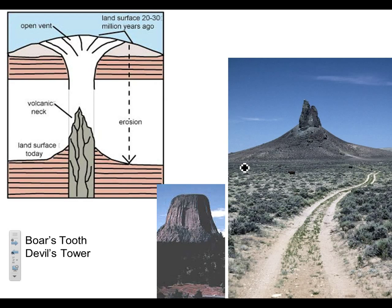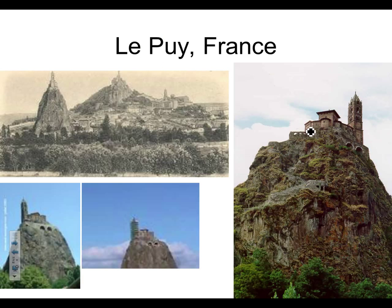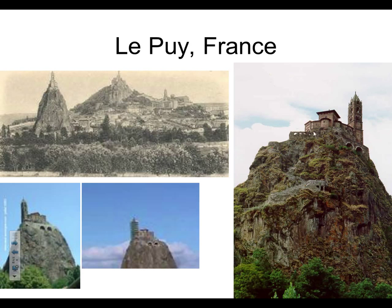Other examples include Boar's Tooth and Devil's Tower — again the solid rock remaining where the rest of the volcano has gradually eroded away leaving behind the neck. These examples in France are quite neat — they have a monastery built on top of one of these necks. You'd want the high ground for defense and to be closer to God. Quite impressive.